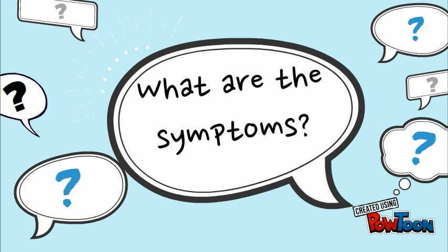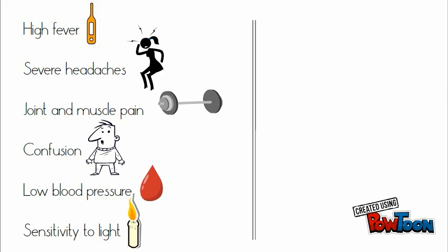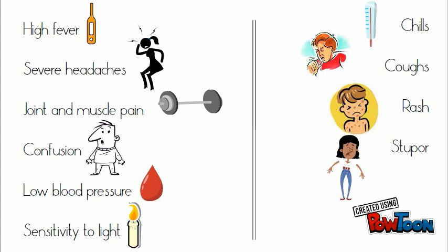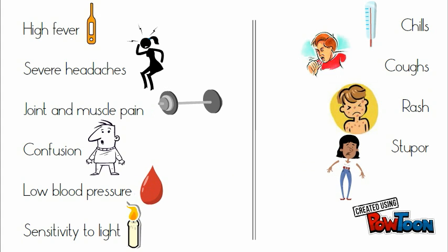What are the symptoms? The symptoms are high fever, severe headaches, joint and muscle pain, confusion, low blood pressure, sensitivity to light, chills, coughs, a rash that starts in the middle of the body and spreads everywhere except the palms of the hands and the soles of the feet, and stupor, meaning lack of awareness.